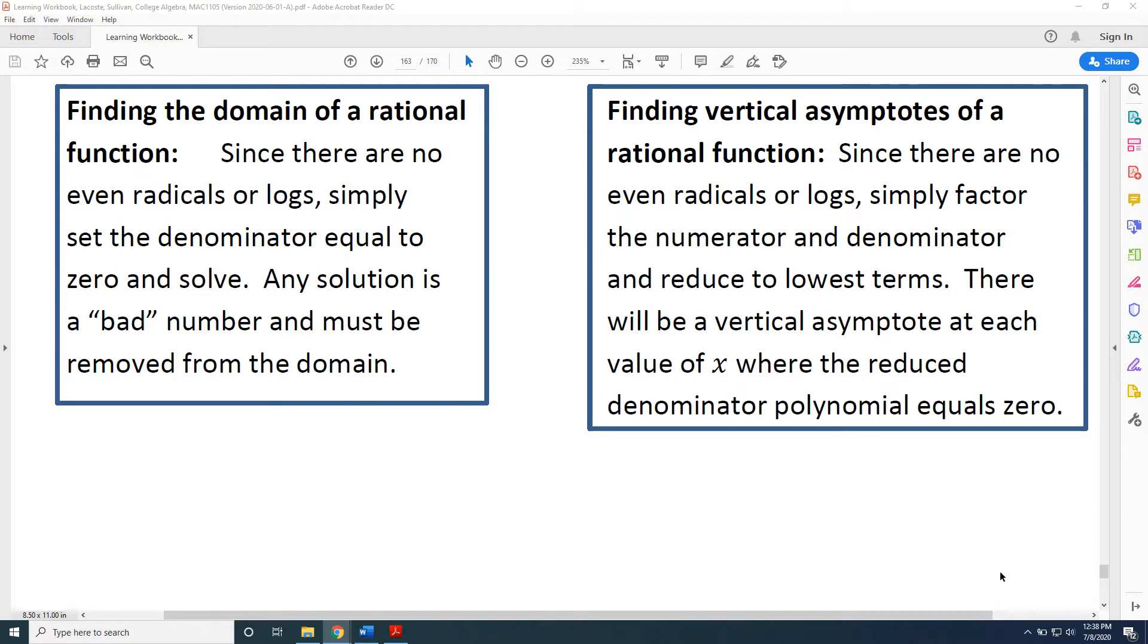Now, finding vertical asymptotes of a rational function. Since there are no even radicals or logs, simply factor the numerator and denominator and reduce to lowest terms. There will be a vertical asymptote at each value of x where the reduced denominator polynomial equals zero.